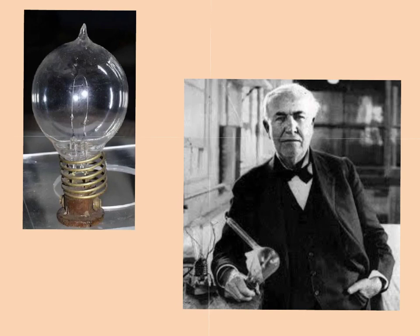Once Edison created the light bulb, in 1880 he started developing ways to produce electricity and worked extensively on bringing power to cities around the nation. Eventually his company became General Electric, or GE, and with the financial support of J.P. Morgan, he was able to build power stations around the United States to light up the nighttime skies.